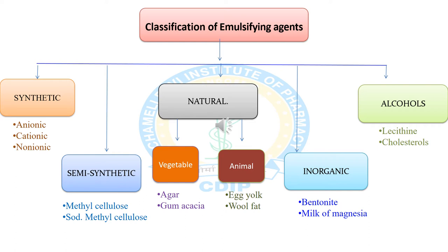The classification of emulsifying agents: on the basis of origin or source, emulsifiers are classified into five classes. First is synthetic emulsifier, second is semi-synthetic emulsifier, third is natural emulsifier, fourth is inorganic emulsifier, and the last class is alcohol-based emulsifier.